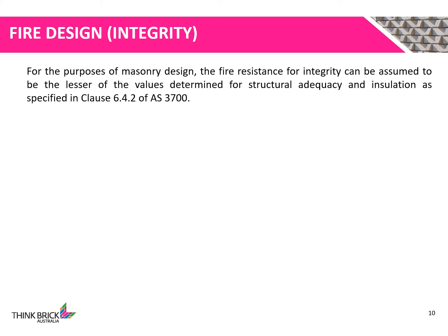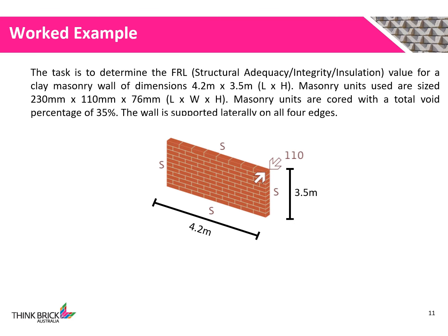For the purposes of masonry design, the fire resistance period for integrity can be assumed to be the lesser of the values determined for structural adequacy and insulation. This is specified in clause 6.4.2 of AS 3700. To put it all together, we're going to quickly run through a typical FRL evaluation of a masonry wall.